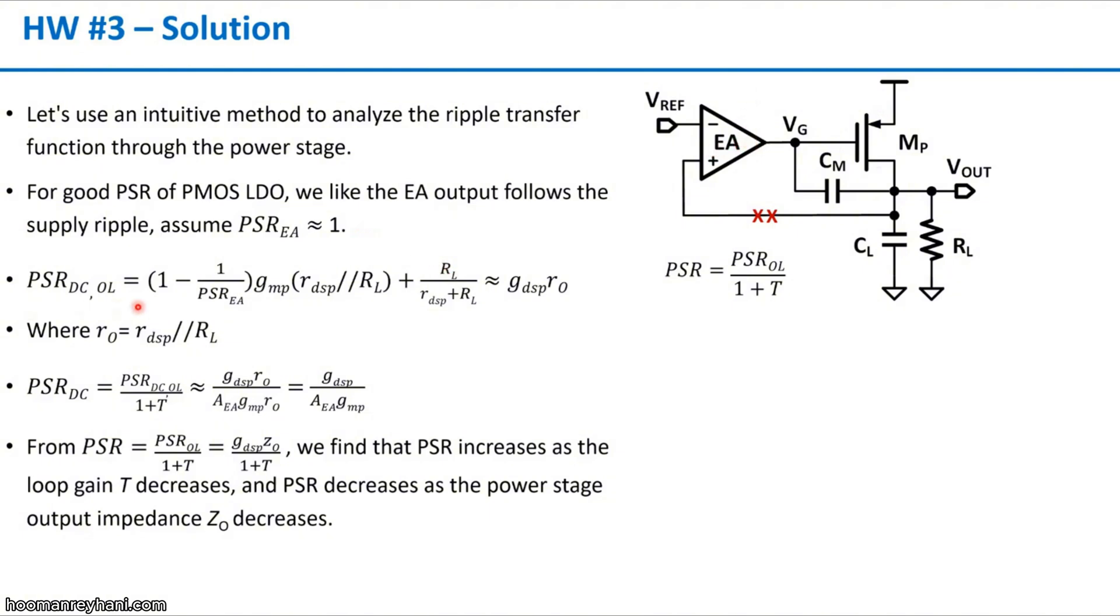And then we can calculate the open-loop PSR. Because the EA output follows the input ripple, the gm of the power transistor does not have much effect on the output. And then the remaining part will be the RDS of the power transistor and the load resistance. So the open-loop PSR at DC will be approximately GDSP times RO, where RO is the output impedance of the power stage.